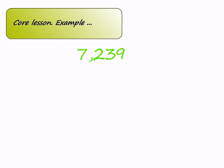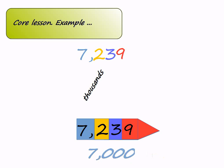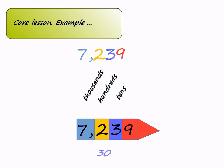Let's build the number 7239. We start with 7000. On top of that, we put 200, then 30, and finally 9. 7 is in the thousands place, so its place value is 7000. 2 is in the hundreds place, so it is worth 200. 3 is in the tens place, so its place value is 30. And finally 9 — it is in the ones place, so its place value remains 9.